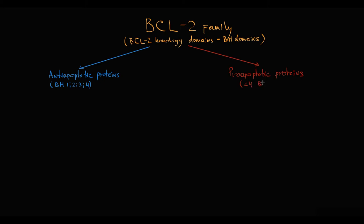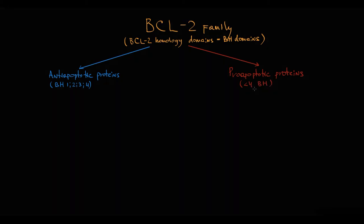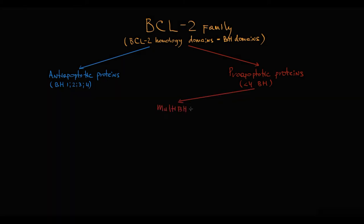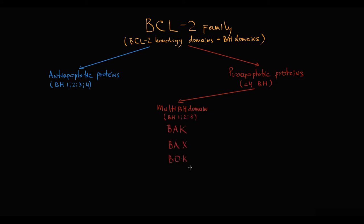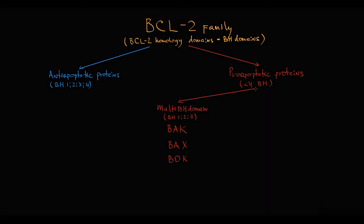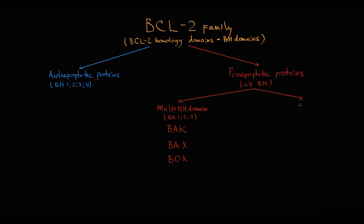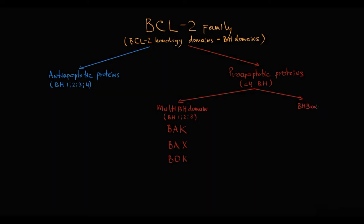The quantity of BH domains in pro-apoptotic proteins varies. Pro-apoptotic proteins are divided into multi-BH domain pro-apoptotic proteins, which have 3 BH domains — it's BAX and BAK proteins, and also BOK protein (though its function is less well understood). The second, much larger group are BH3-only proteins, which have only one BH domain — these include BIM, BID, PUMA, BAD, NOXA, and BIK proteins.